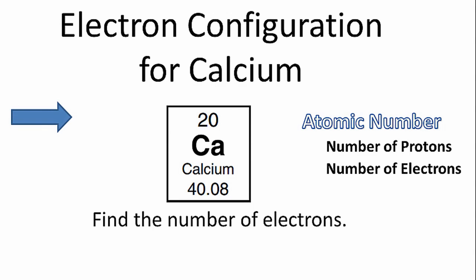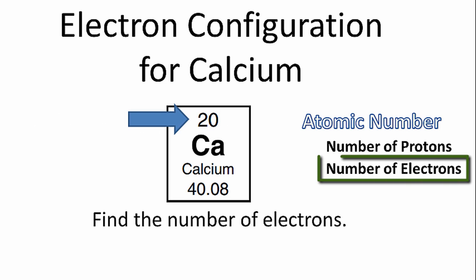In order to find the electron configuration for calcium, we first need to know the number of electrons in the calcium atom. We'll find that on the periodic table, and we'll look at the atomic number. That's the number of protons, but it also is the number of electrons.